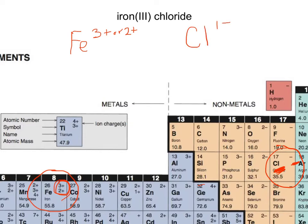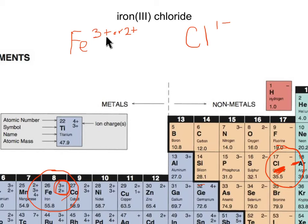The next thing we need to decide is whether we're going to use the 3+ or the 2+. In our word formula it says iron(III), so what we're going to do is definitely use the 3.